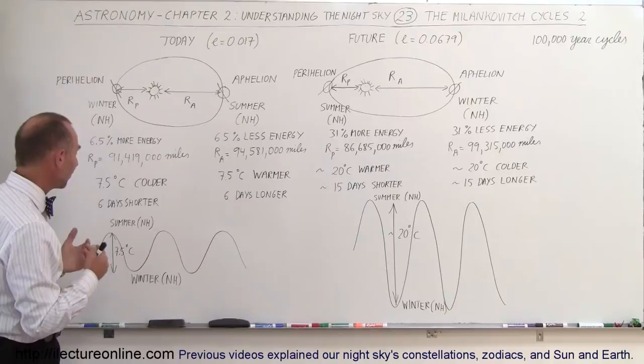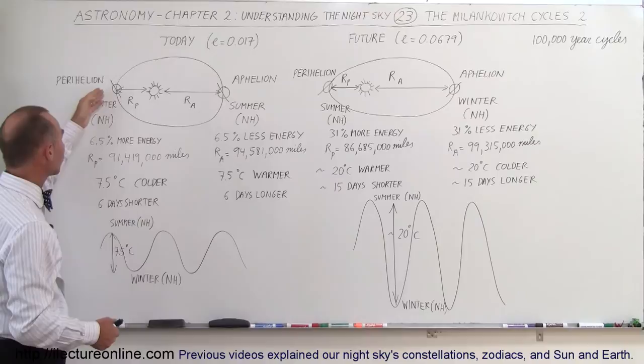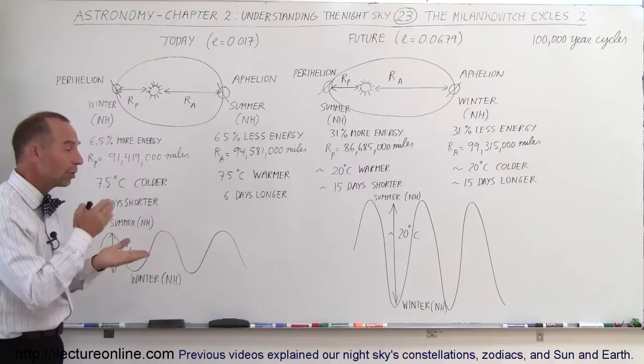On top of that, affecting the climate, because of Kepler's second law, when we're close to the Sun, the Earth travels faster. When we're farther away from the Sun, the Earth travels slower. Our winters are about six days shorter than the summers, and that alone also makes a tremendous effect on the winters.